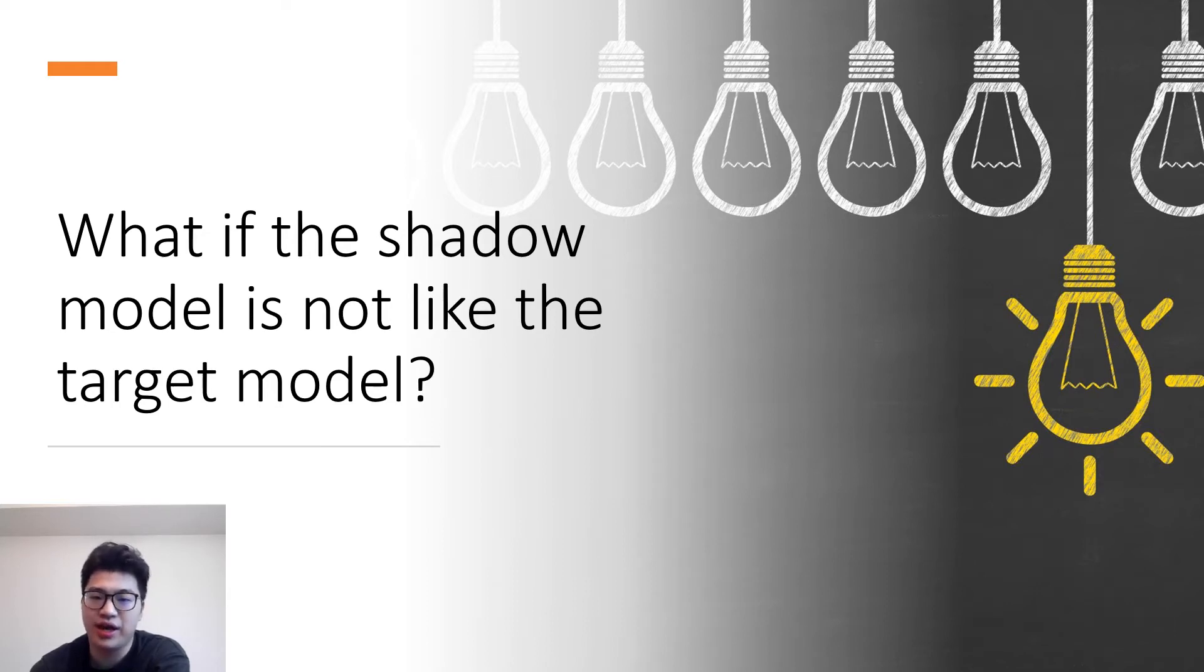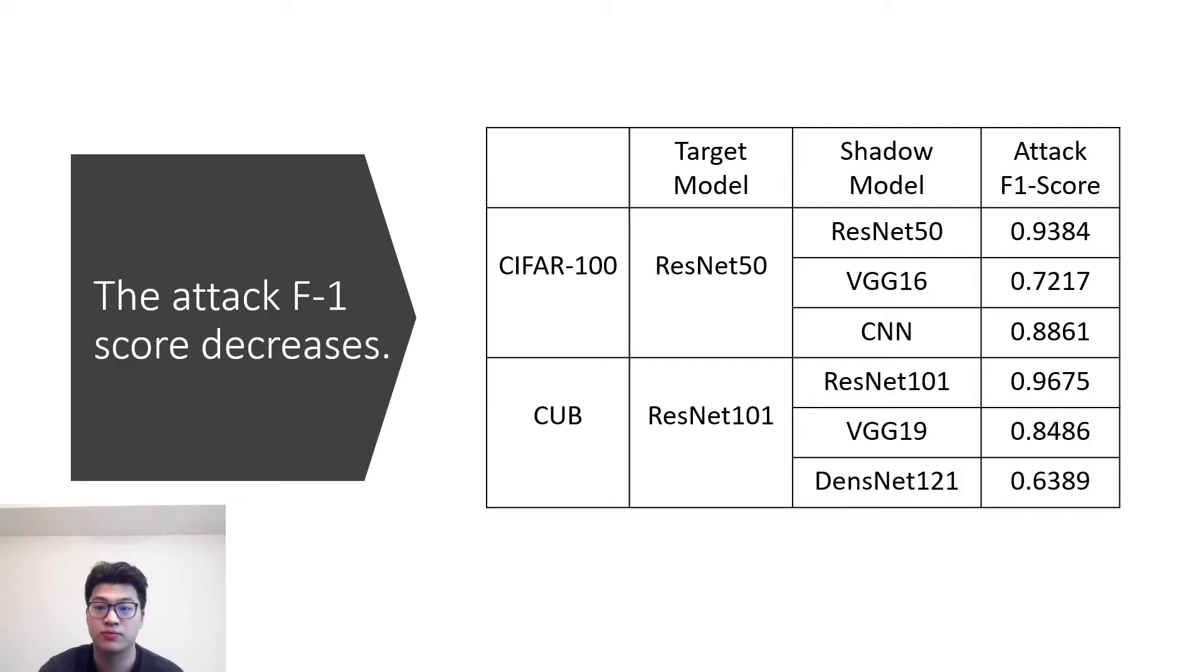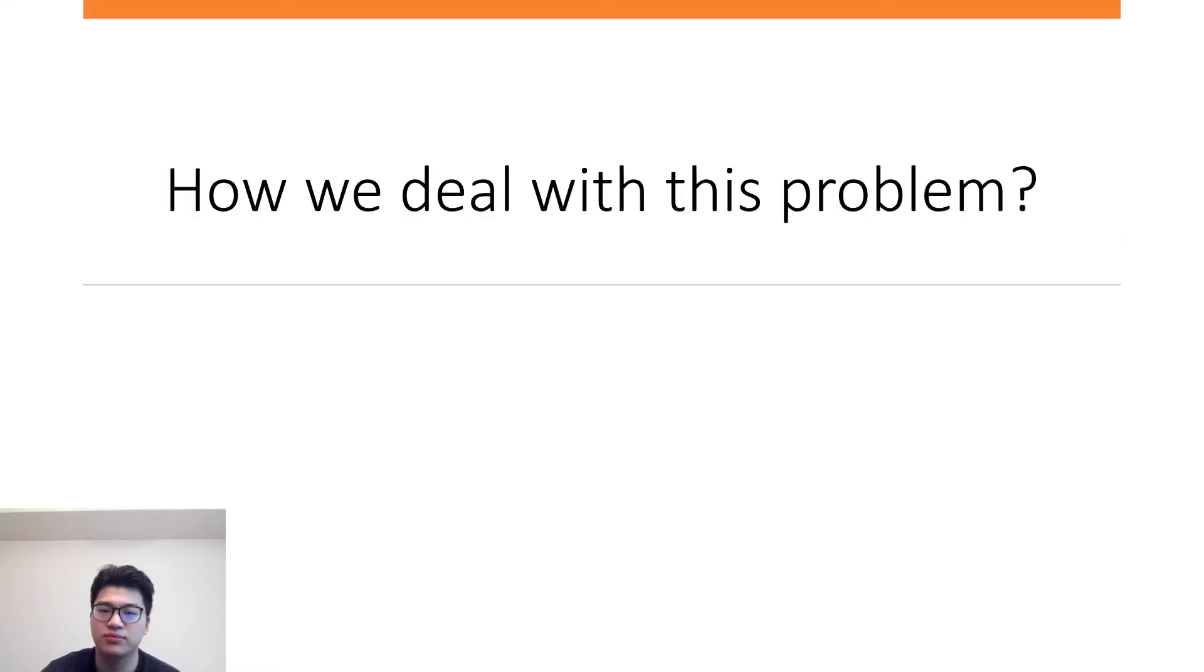But is there any problem if the shadow model is not similar to the target model? The answer is yes. We can see that if the adversaries choose the same model as target, the attack F1 score is relatively high, even up to 96 percent. But if they choose a different model, the attack F1 score will decrease a lot. So how to deal with this problem? Our thought is to give up the shadow models.